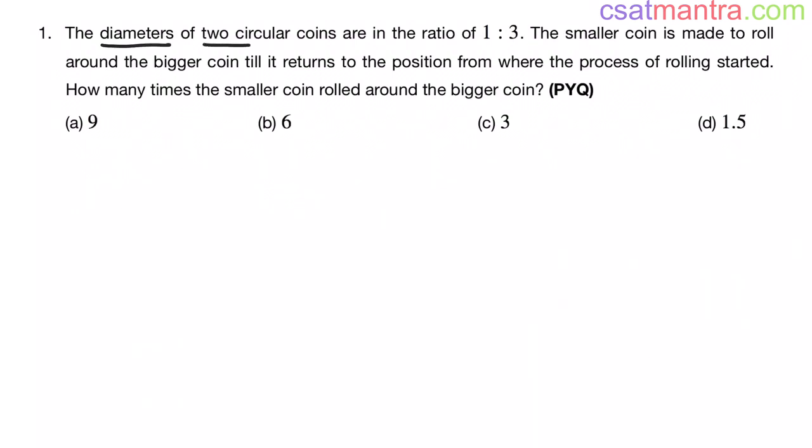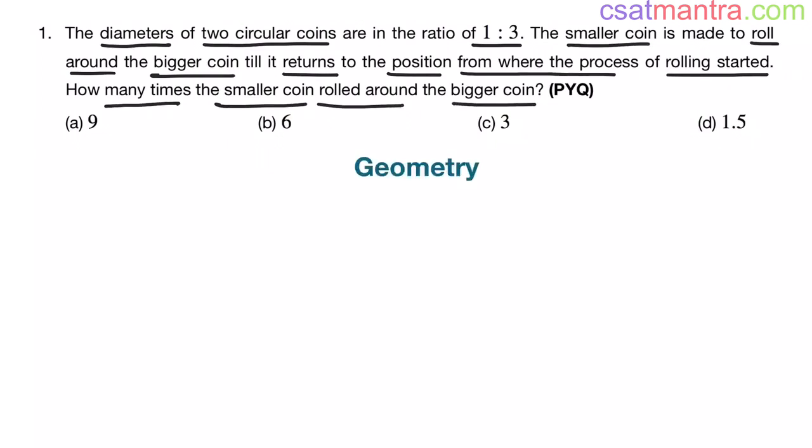The diameters of two circular coins are in the ratio 1 is to 3. The smaller coin is made to roll around the bigger coin till it returns to the position from where the process of rolling started. How many times the smaller coin rolled around the bigger coin? This is a previous year question from geometry chapter.